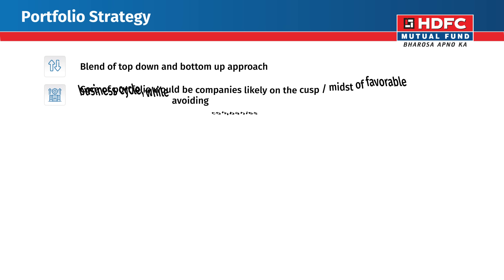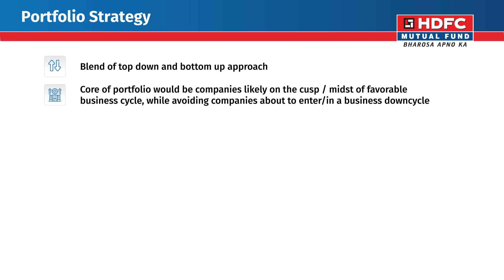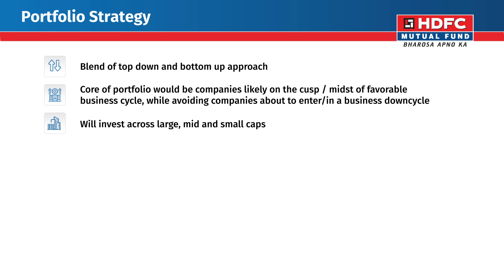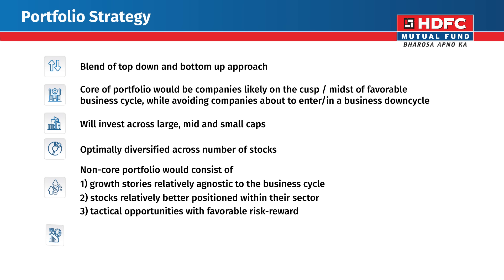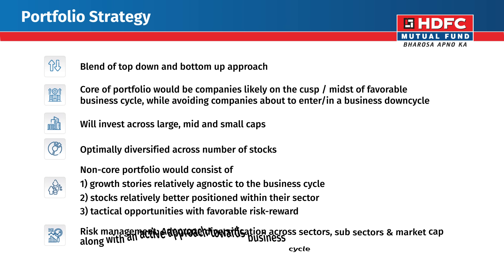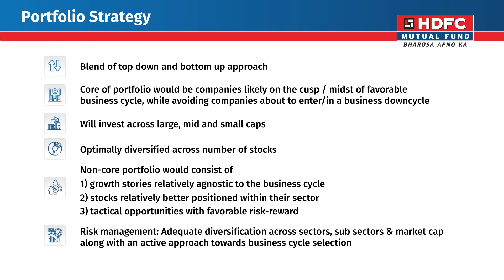The core of the portfolio would be companies likely on the cusp or midst of a favourable business cycle, while avoiding companies about to enter or in a business down cycle. The fund will invest across large, mid, and small caps, optimally diversified across the number of stocks, with adequate diversification across sectors, sub-sectors, and market cap, along with an active approach towards business cycle selection.